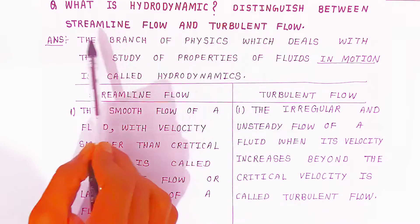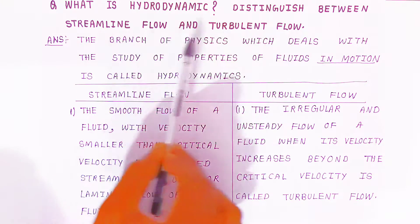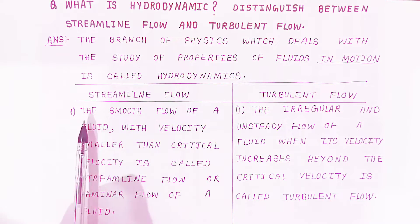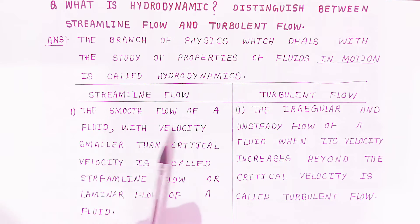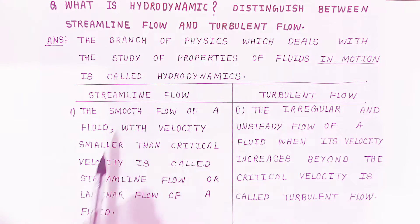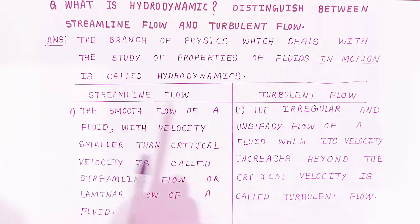There are two types of motion: streamline flow and turbulent flow. In streamline flow, the smooth flow of fluid with velocity smaller than the critical velocity is called streamline flow, or laminar flow of a liquid. If the velocity is less than critical velocity, the smooth flow of fluid is called streamline flow.